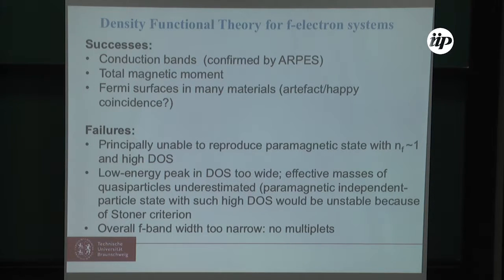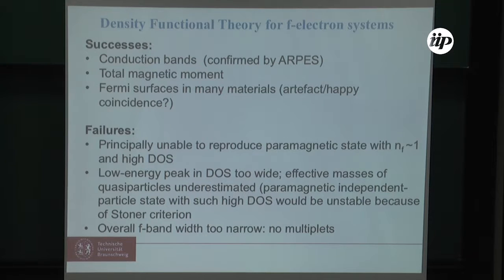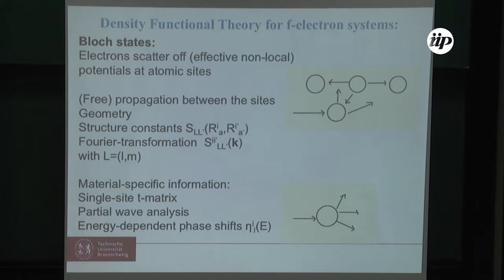There are also well-known failures. Density functional theory is principally unable to reproduce a paramagnetic state with f-occupation close to unity simultaneously with a high density of states. The low-energy peak in the density of states usually comes out too wide, meaning the effective masses of quasi-particles are underestimated. On the other hand, the overall bandwidth is too small because the theory does not reproduce atomic multiplets. To understand why Fermi surfaces are often well described, we have to examine what we are calculating and how we solve the band structure problem.